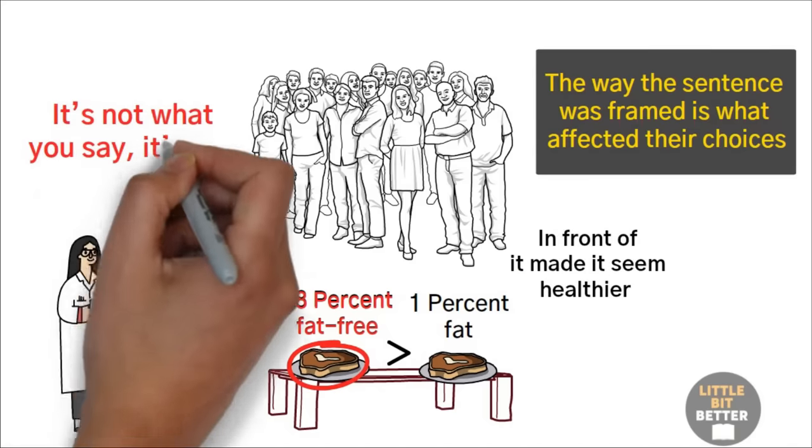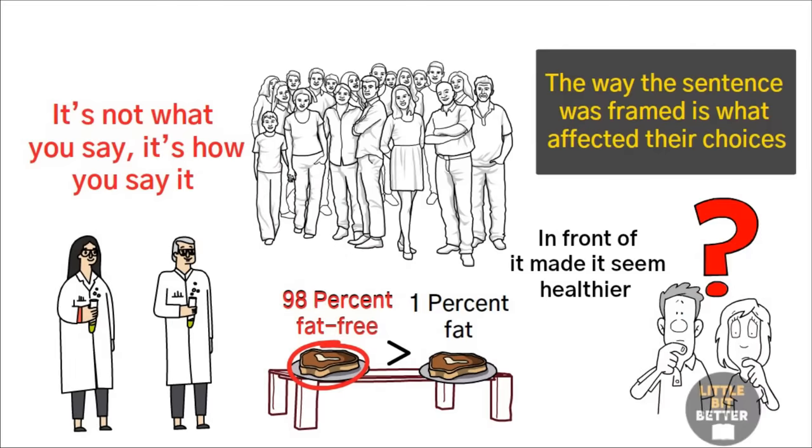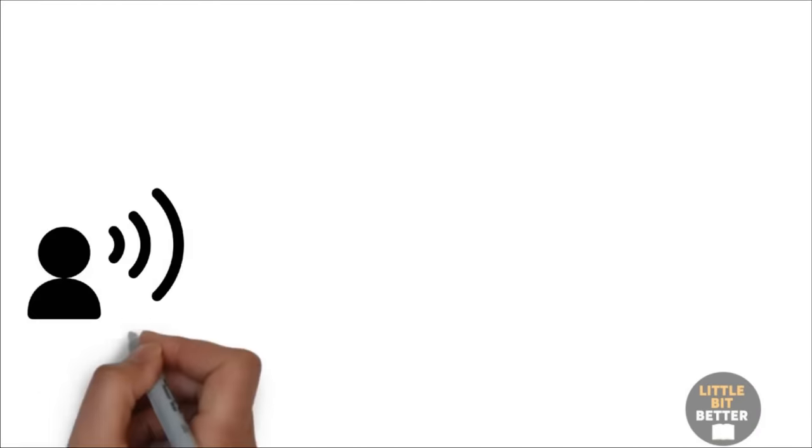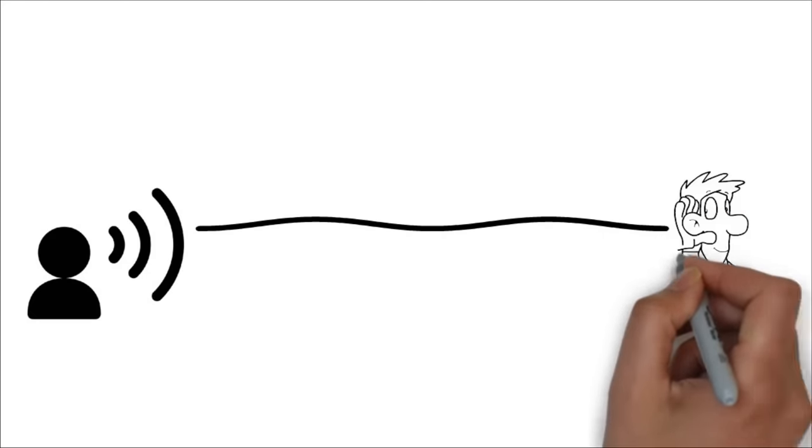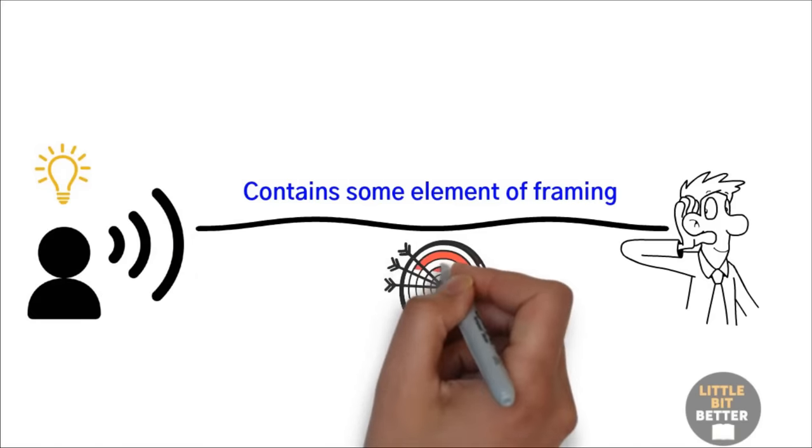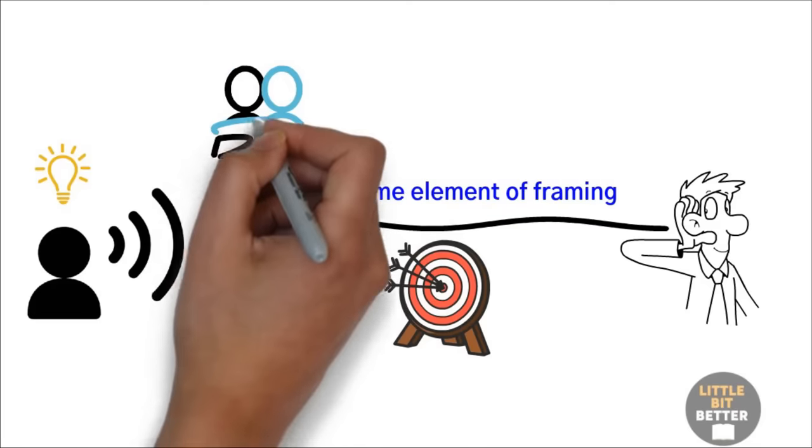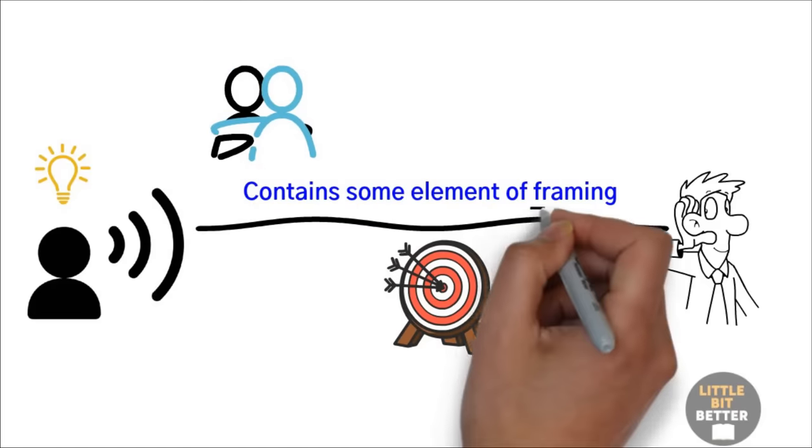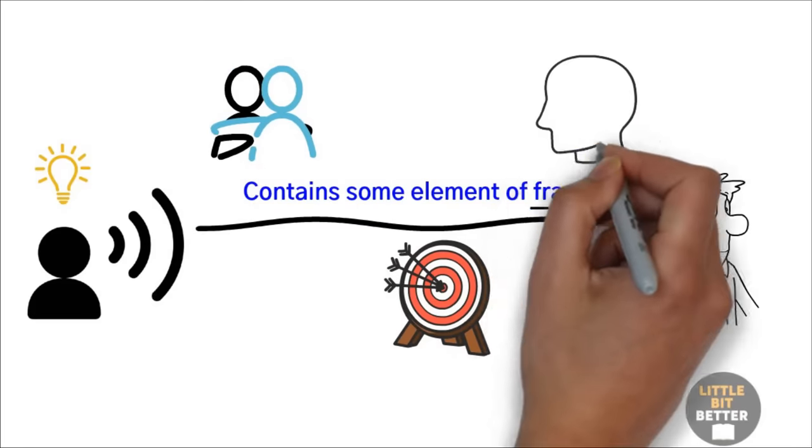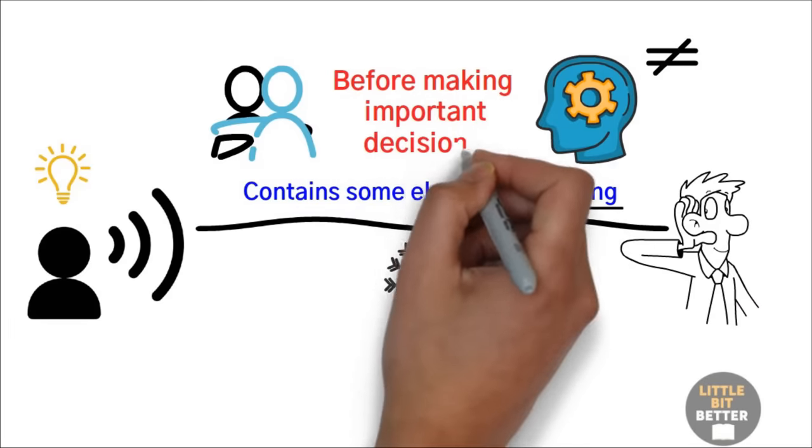It's not what you say, it's how you say it. So how does knowing that help you make better choices? Always try to realize that whatever you communicate contains some element of framing. If you choose your words carefully, you'll communicate better and reach your communication goals more often. Every piece of information you hear, even if from a trusted or reputable source, is subject to this effect too. So be careful and analyze the information you receive from different and even opposite perspectives before making important decisions.